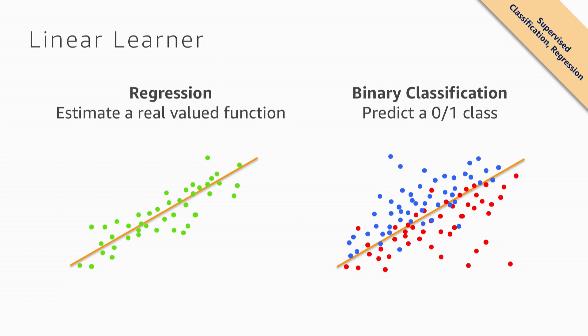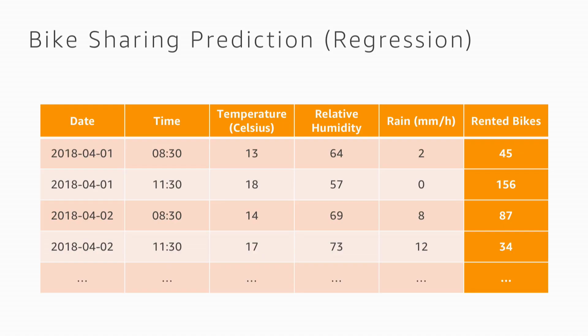Building linear models is still very powerful. You can use them for regression — estimating a numeric variable like how long it takes to get somewhere — or for binary classification, such as determining whether an email is spam or not, which most mail clients now implement using some form of machine learning.